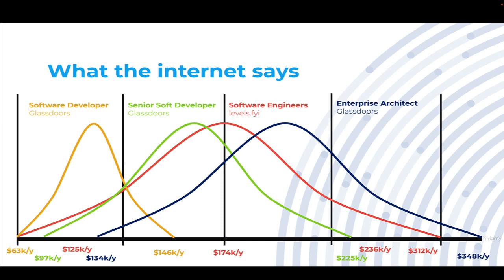Figuring out the total compensation you should be earning can be very confusing. Prior to the internet you had to talk to close friends to figure out who was making what — it was a guessing game. Now with the internet, everyone posts their salaries anonymously everywhere, which can actually be too much information. A good example is that Glassdoor tracks salaries very differently than Levels.fyi, which is also different from Indeed, so you really have to understand how a particular site is tracking salary.